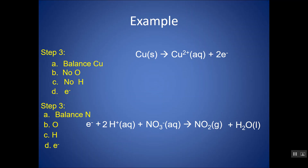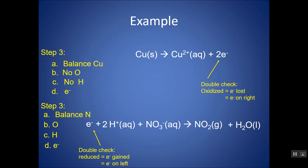Now I have two correctly balanced half reactions. To get the full reaction I need to add them together, but first I must ensure conservation of electrons — however many electrons are lost must equal electrons gained. The top reaction has two electrons lost; the bottom has only one electron gained. Also verify that the oxidation half reaction has electrons on the right (lost) and the reduction half reaction has electrons on the left (gained) — if not, something is incorrect.